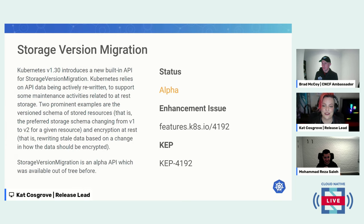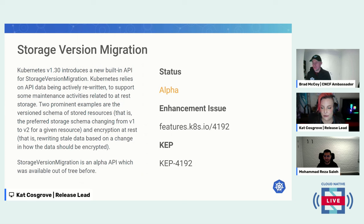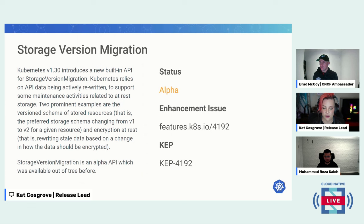Next up is storage version migration. Kubernetes 1.30 introduces a new built-in API for storage version migration. Kubernetes relies on API data being actively rewritten to support some maintenance activities related to at-rest storage — two prominent examples being the preferred storage schema changing from v1 to v2 for a given resource, and encryption-at-rest rewriting stale data based on a change in how data should be encrypted. Storage version migration was an alpha API available out of tree before; it is now in-tree.